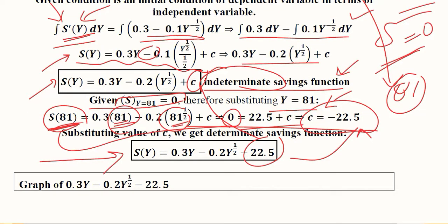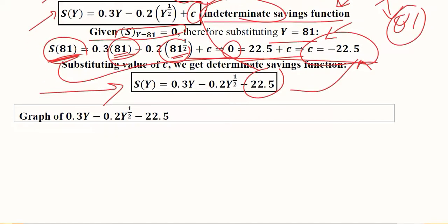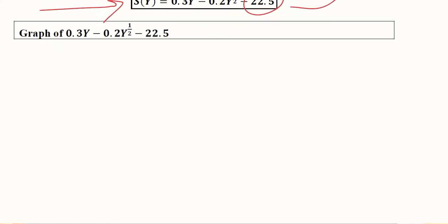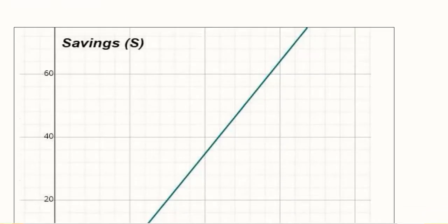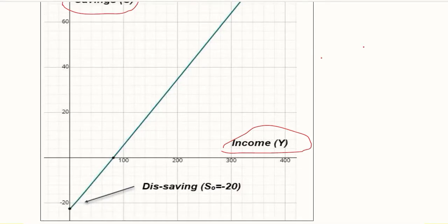We can make a graph of it. In the next slide you will see the graph of this definite version of the savings function. This graph is self-evident. Income is on the x-axis and savings depend on it, so savings is on the y-axis and has a positive relationship.